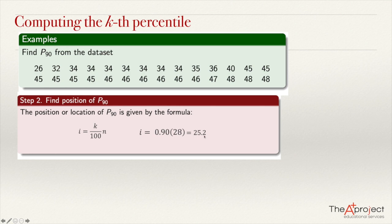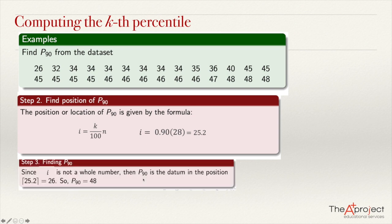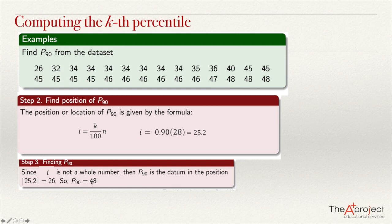Using a calculator, i = 0.90 × 28 = 25.2. Since this is a decimal number, we round up to 26. Counting from the ordered array, the last value is at position 28, so position 27 is second-to-last, and position 26 is the data value 48. Therefore, the 90th percentile is 48.